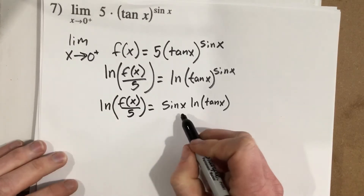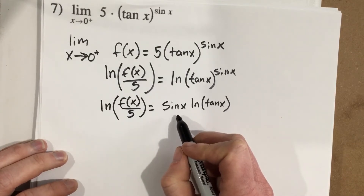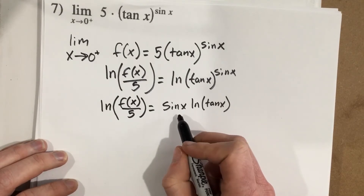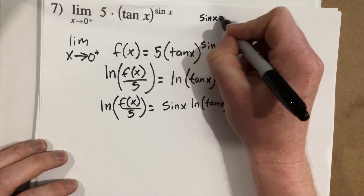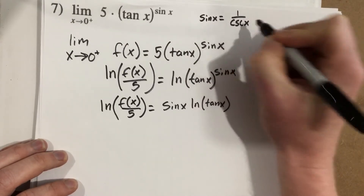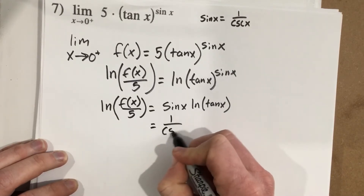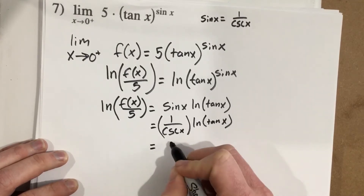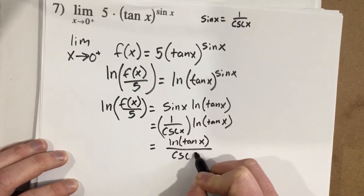This is where the problem occurred — I was struggling to write this into fraction form to use L'Hôpital's rule. Maddie suggested using trig reciprocal functions to rewrite it as a fraction. The function I need is the reciprocal identity: sin(x) = 1/csc(x). Rewriting gives 1/csc(x) · ln(tan(x)), which can be written as ln(tan(x)) / csc(x). Now we're in a great spot to apply L'Hôpital's rule.